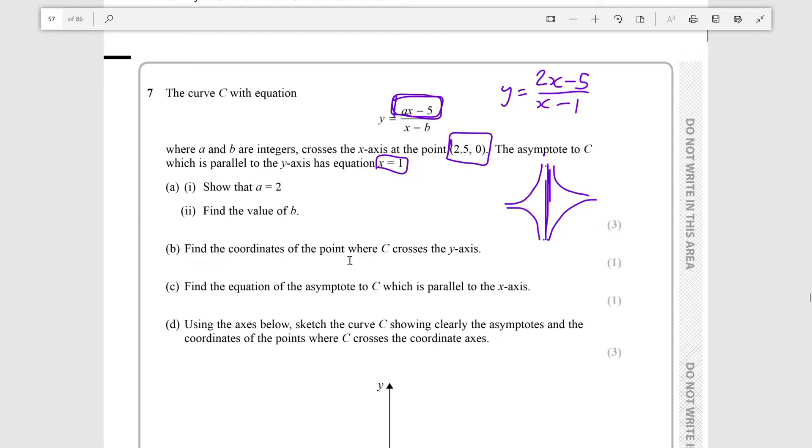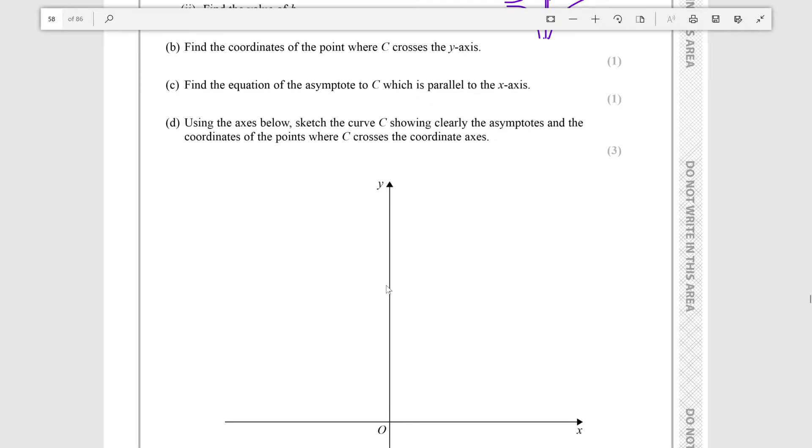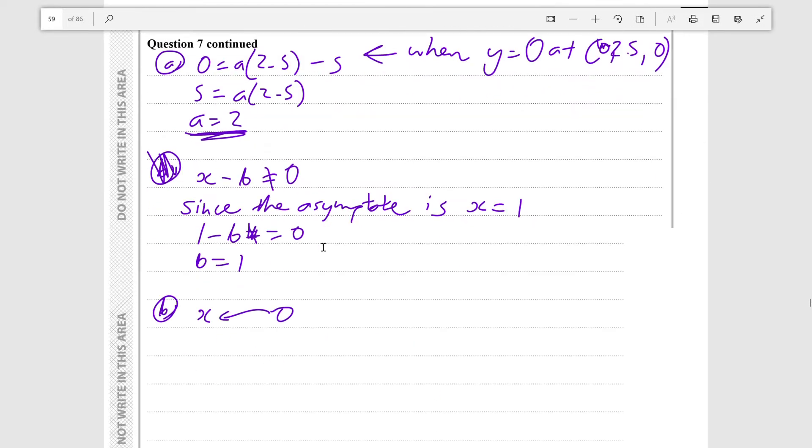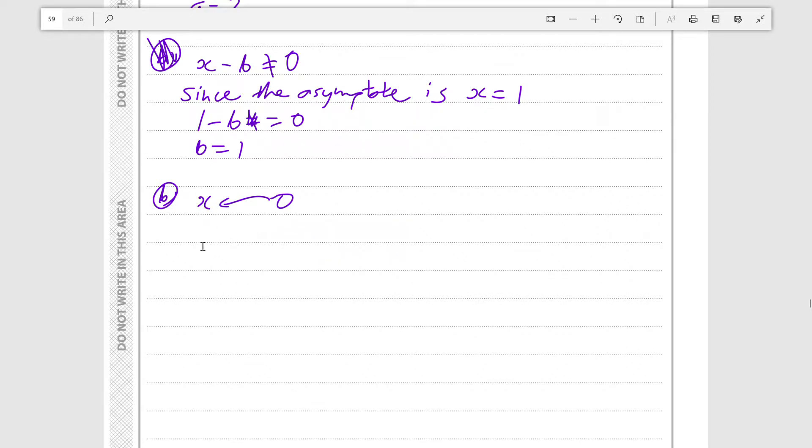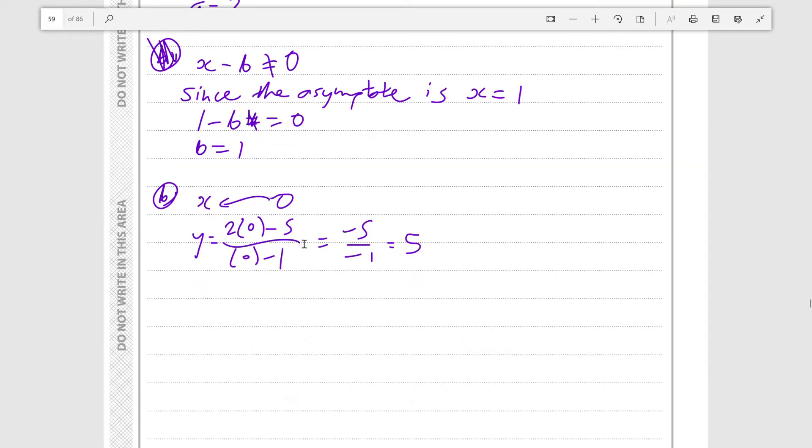Now we need to find the coordinates to the point where C crosses the y-axis. When x is 0, because the y-axis is just the line of x equals 0, you substitute 0 in for x to get your y value where it crosses the y-axis. So y equals 2 times 0 minus 5 over 0 minus 1, which equals minus 5 over minus 1, which is just positive 5. It's asking for the coordinates of the point. Do not just answer this 5. You need to give it in the coordinates form, because it's asking for coordinates, not a value of y. So you would write (0, 5). And that's your one mark question.